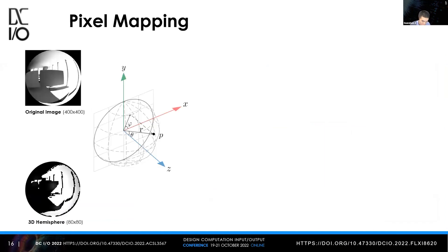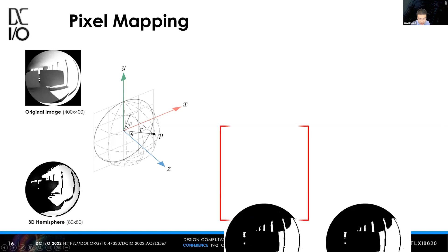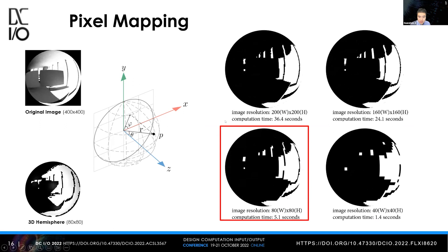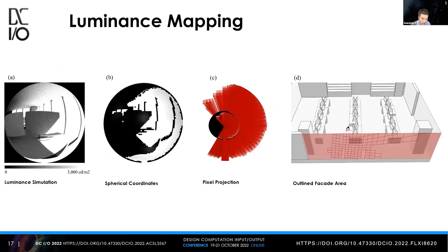Now we have a 2D image. We first translate the 2D pixels into 3D coordinates, then map all pixels onto the hemisphere. The image dimension is decreased from 400×400 to 80×80. When comparing different image resolutions and computation time, we need to balance time and accuracy — at 80×80 resolution, it maintains the edge of each surface while achieving a short computation time. Overall, the workflow is: simulate the luminance values, translate the 2D image into 3D spherical coordinates, project pixels into 3D space, and outline the façade areas by the projected geometries.